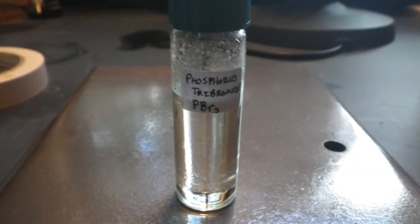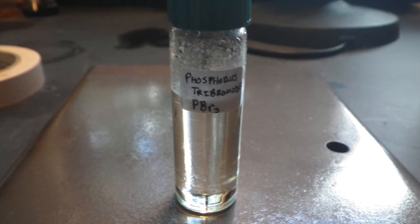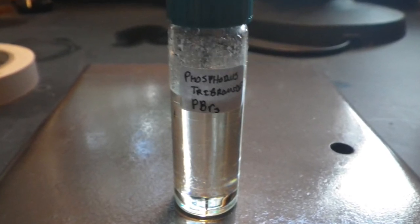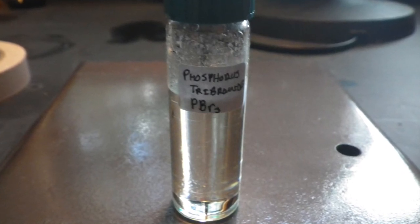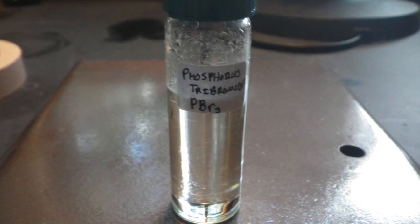Here's the final product, 30.4 grams of phosphorus tribromide, a very dense, clear, colorless liquid that fumes in air. This represents an excellent 87% yield based on bromine.